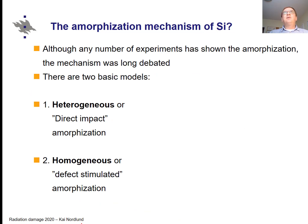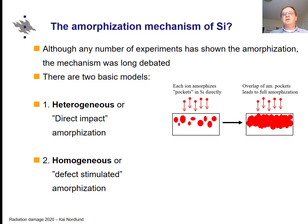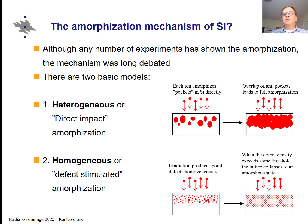The physical question of interest is how the amorphization proceeds, and this has been debated for a long time. There have been two basic models: so-called heterogeneous or direct impact amorphization, where you make amorphous pockets which lead to full amorphization; and the idea that you introduce many point defects more or less homogeneously at random positions, and when the concentration is high enough the lattice collapses to an amorphous state. Neither of these models is entirely right.